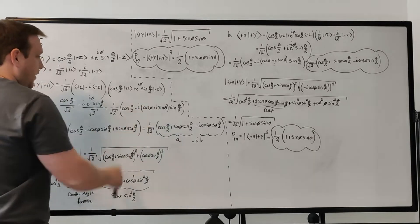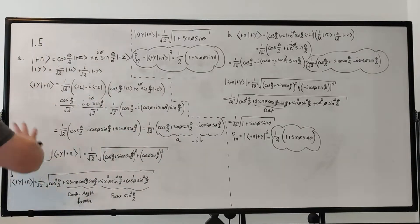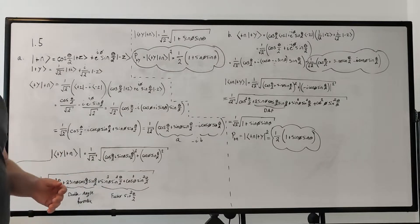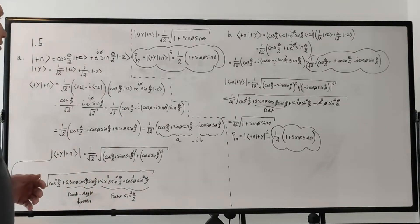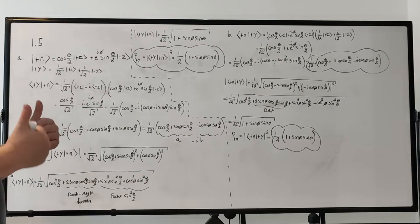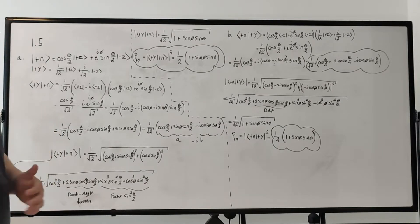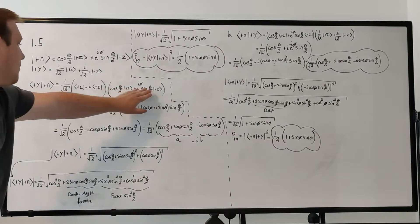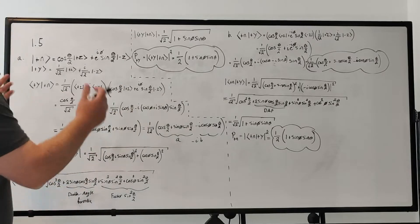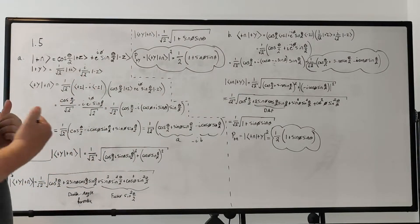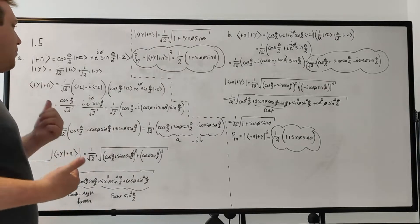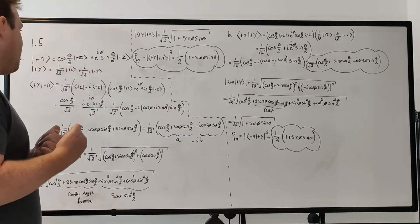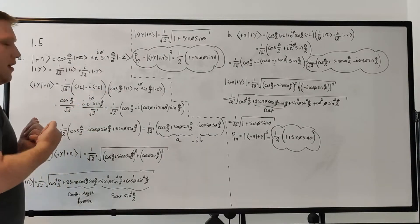|+n⟩ is just the expression written above. Now we foil that out. Remember that |+z⟩ and |−z⟩ are a complete orthonormal set of basis states, so they are orthogonal to each other. When we compute ⟨+z|−z⟩, that inner product is zero, whereas ⟨+z|+z⟩ or ⟨−z|−z⟩ each equal one.